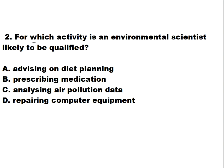Question two: which activity is an environmental scientist likely to be qualified for? Is it A: advising on diet planning, B: prescribing medication, C: analyzing air pollution data, or D: repairing computer equipment? The answer is letter C — analyzing air pollution data.